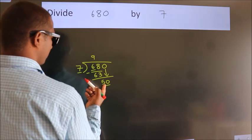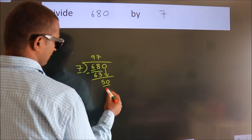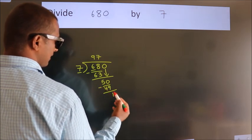A number close to 50 in 7 table is 7 7s, 49. Now we subtract, we get 1.